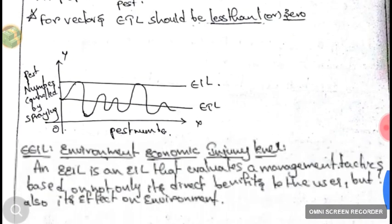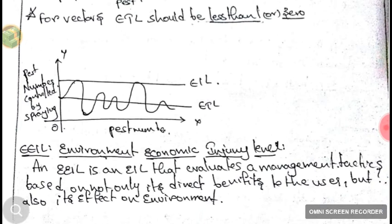The next concept is EEIL — Environmental Economic Injury Level. EEIL is an EIL that evaluates management tactics based not only on their direct benefits to the user but also on their effects on the environment. We cannot use pesticides indiscriminately; we must consider environmental pollution alongside direct economic benefits.